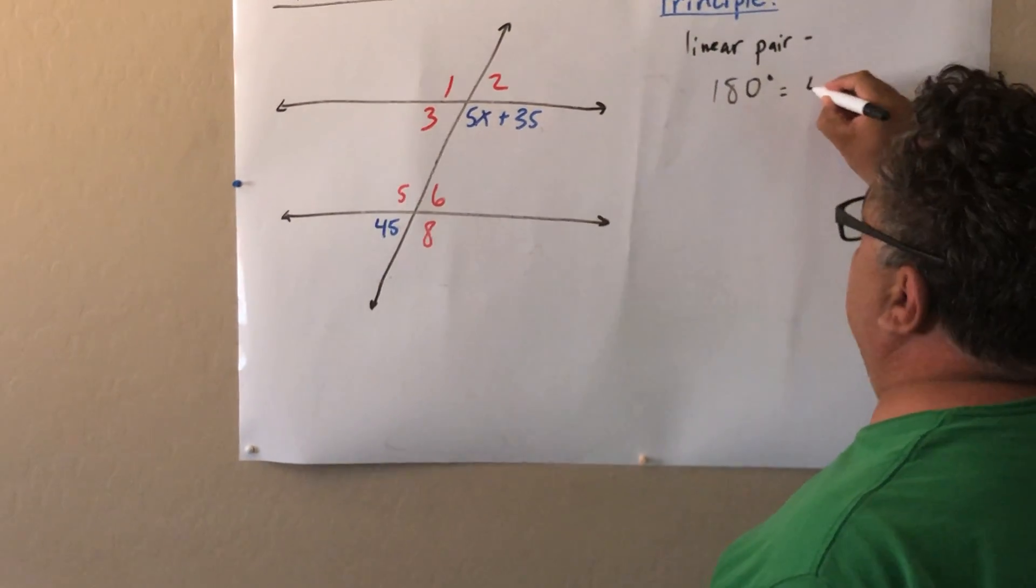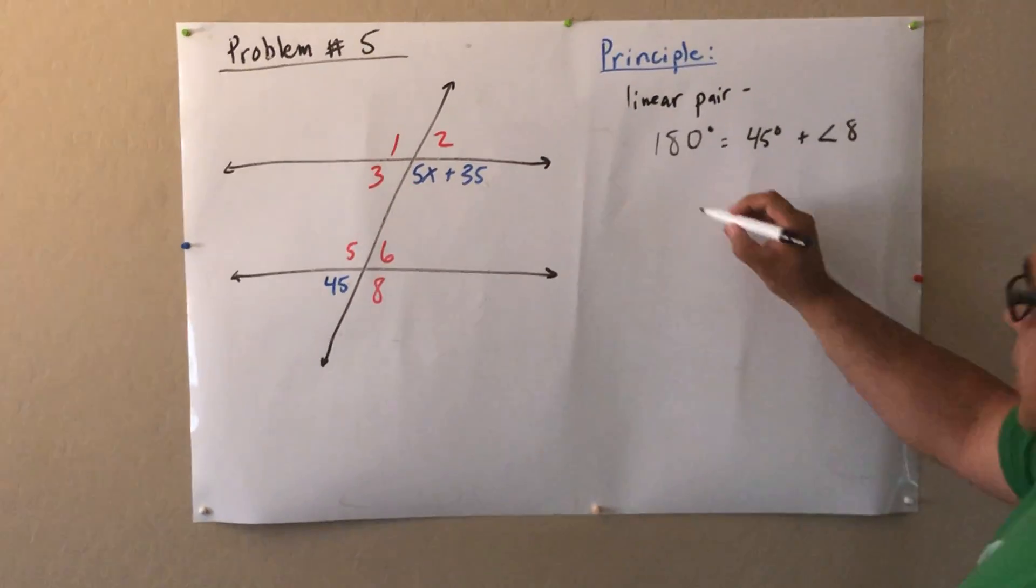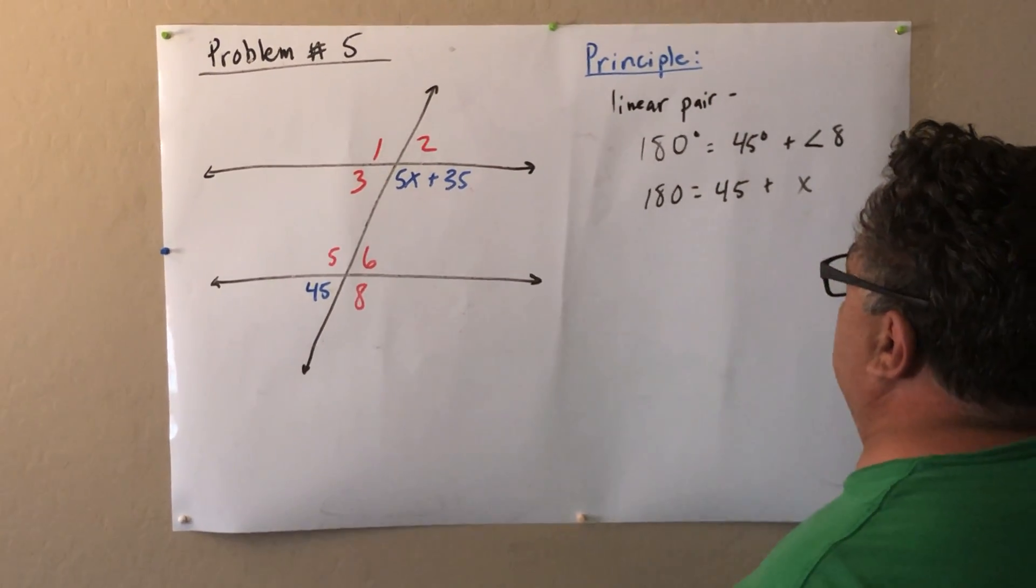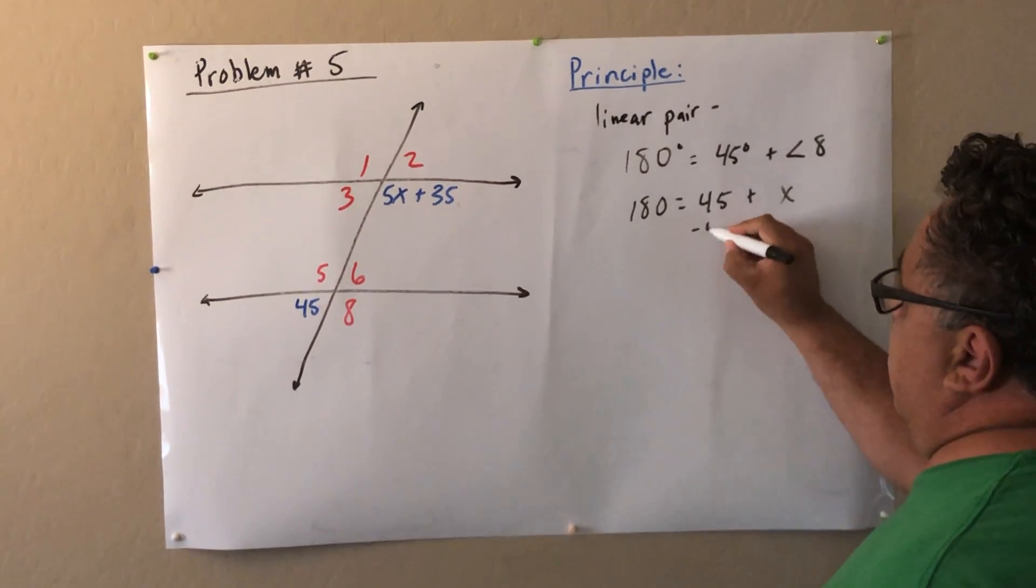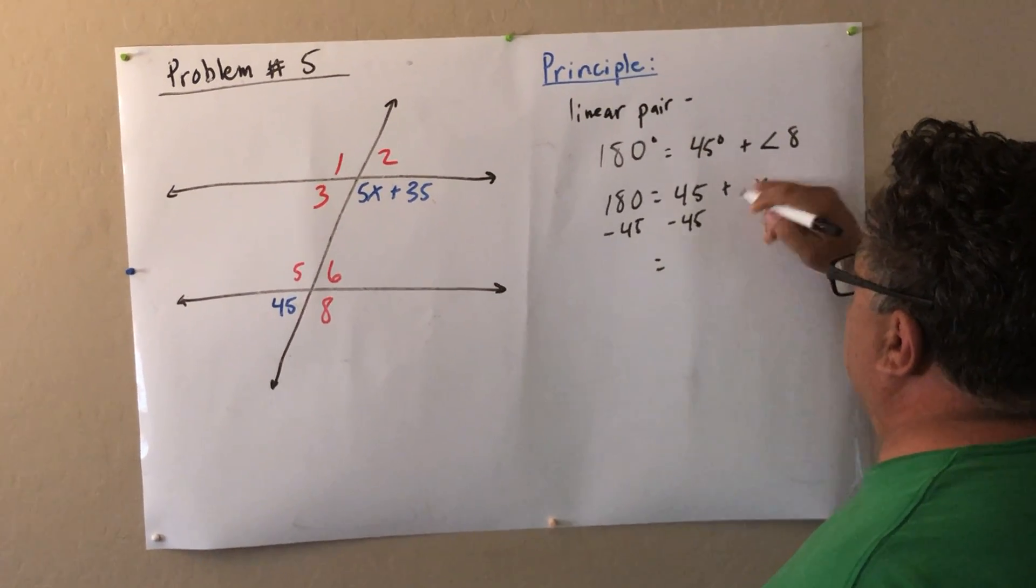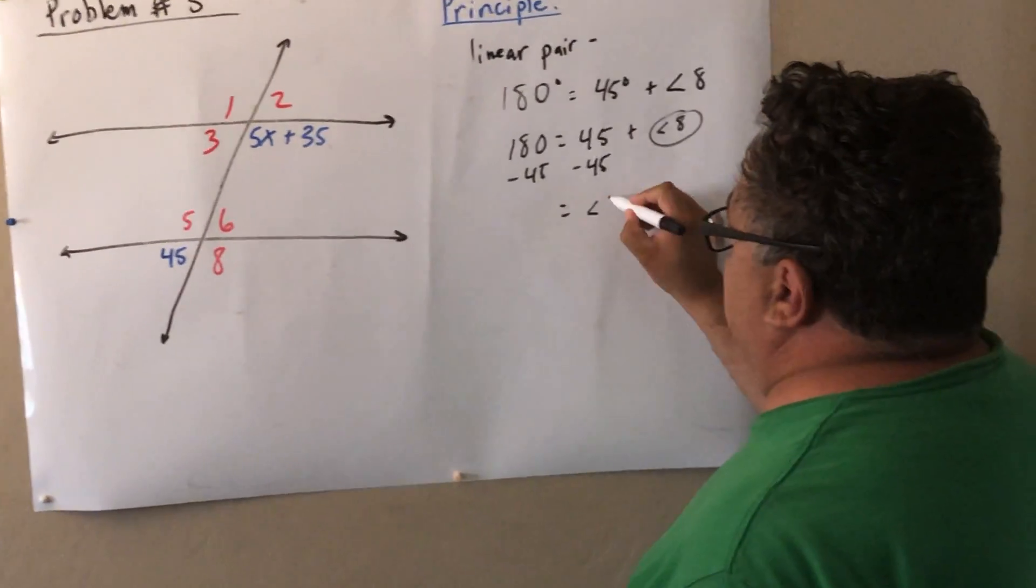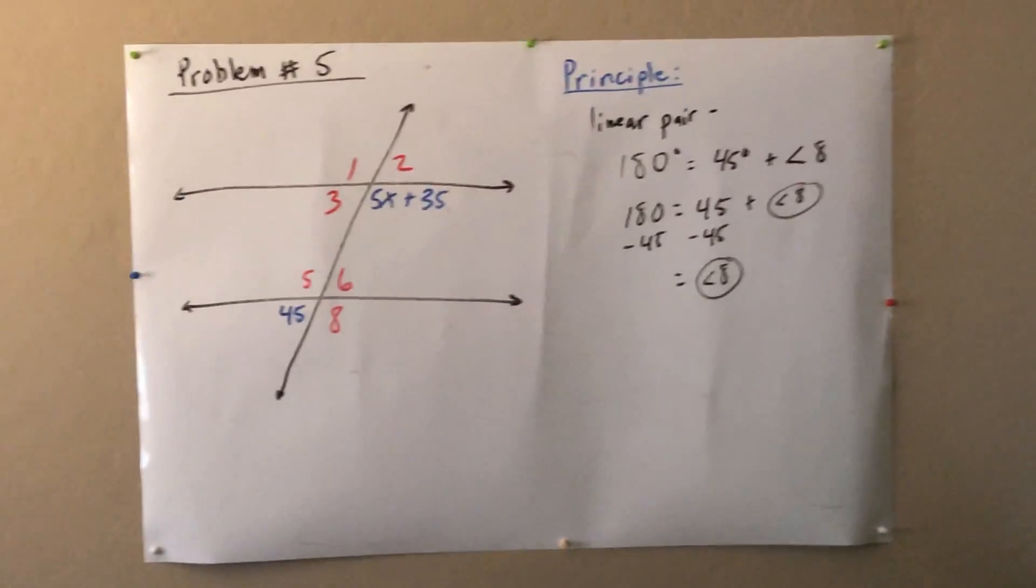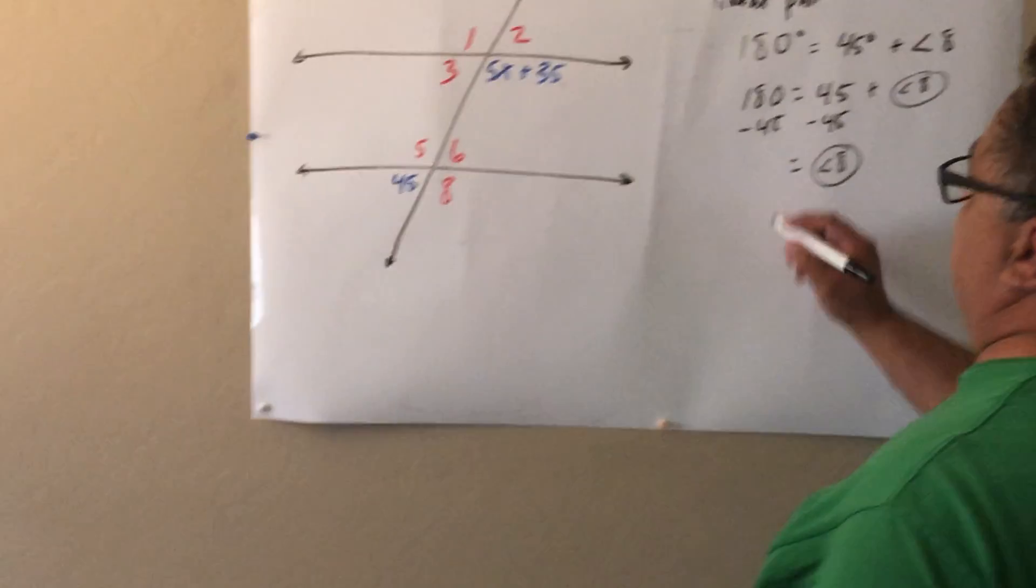180 degrees equals 45 degrees plus angle 8. Or I can just say another way of saying it is 180 degrees equals 45. And I'll call angle 8 just x right now so I can solve for that variable. If I subtract 45 from both sides right here, I'll just keep this as angle 8. Angle 8 is 180 degrees minus our 45 which is going to be, the quick math in my head is going to be 135 degrees.